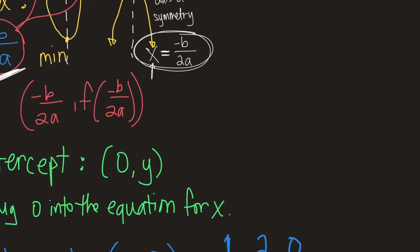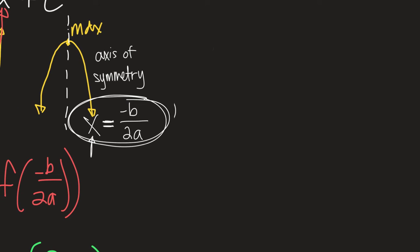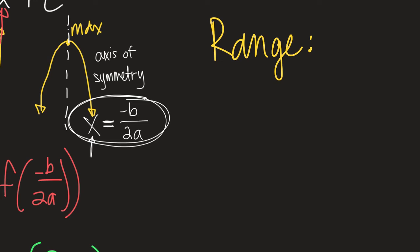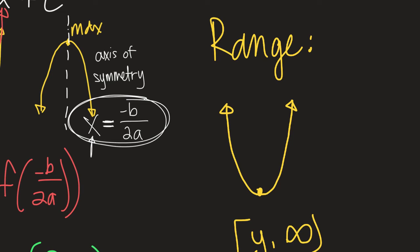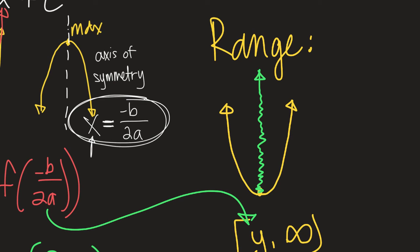The last thing we can talk about is finding the range — that's about the Y values. The domain of all quadratics is all real numbers; there are no restrictions on the domain. For a positive quadratic that opens up, the range goes from the Y value of your vertex all the way up to infinity. The smallest Y is going to be the Y value at the vertex, and then Y only gets larger. So you write it with a bracket: bracket Y-coordinate of vertex, comma, infinity.